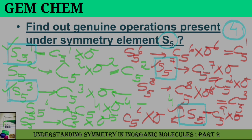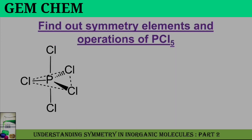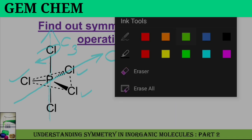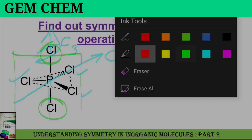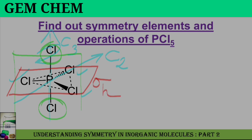Now we are going to see the symmetry elements and operations present for the PCl5 molecule. PCl5 has an identity element E. It also has a C3 axis passing through the middle, and three perpendicular C2 axes — one passing through each equatorial chlorine atom. There are three sigma V planes, each passing through one equatorial chlorine and bisecting the other two. There is one sigma H plane, and finally an S3 axis.